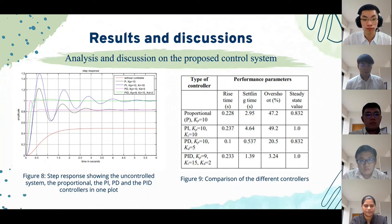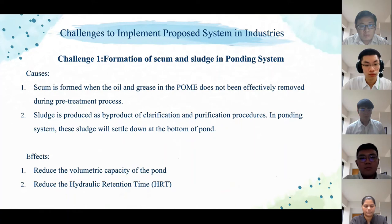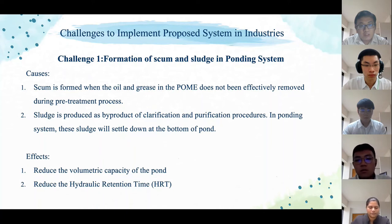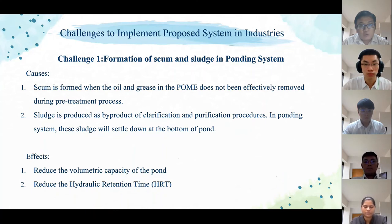I am going to present about the challenges of implementing the ponding system in industry. The first challenge is the formation of scum and sludge. Since POME contains oil and grease, these should be removed by an oil trap improvement process. Failure to remove oil and grease leads to scum formation on the surface of wastewater in the ponding system. Sludge is produced as a by-product of clarification and purification procedures. Since sludge is denser than water, it settles at the bottom of the pond. Eventually, scum and sludge accumulate together inside the pond, directly reducing its volumetric capacity. Sludge also reduces the hydraulic retention time, decreasing the efficiency of the ponding system.